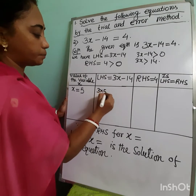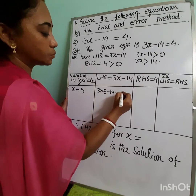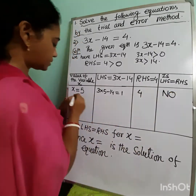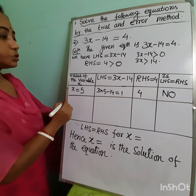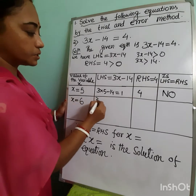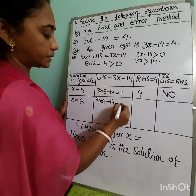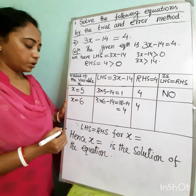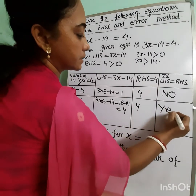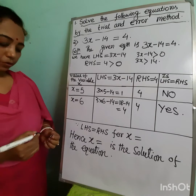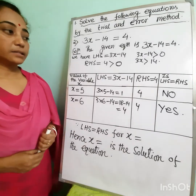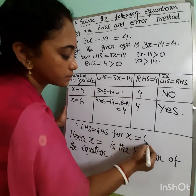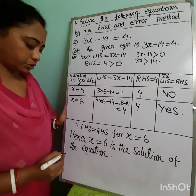For x = 5: left hand side is 3 × 5 − 14 = 15 − 14 = 1, and right hand side is 4. Both sides are not equal, so we write no. For x = 6: left hand side is 3 × 6 − 14 = 18 − 14 = 4, and right hand side is 4. Both sides are equal, so we write yes. Hence x = 6 is the solution of the given equation.